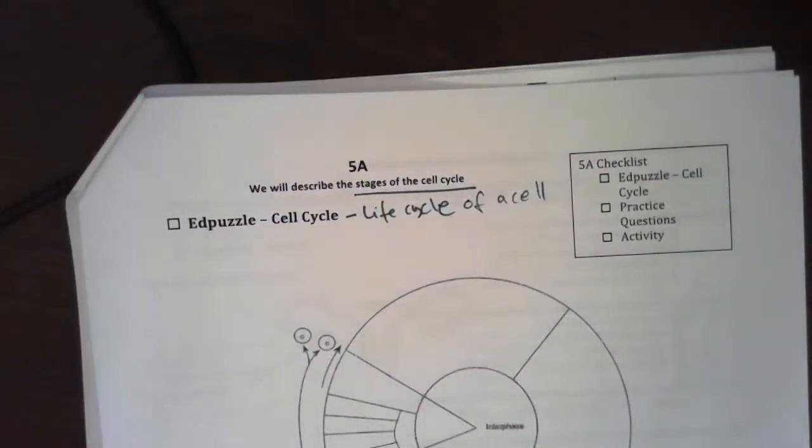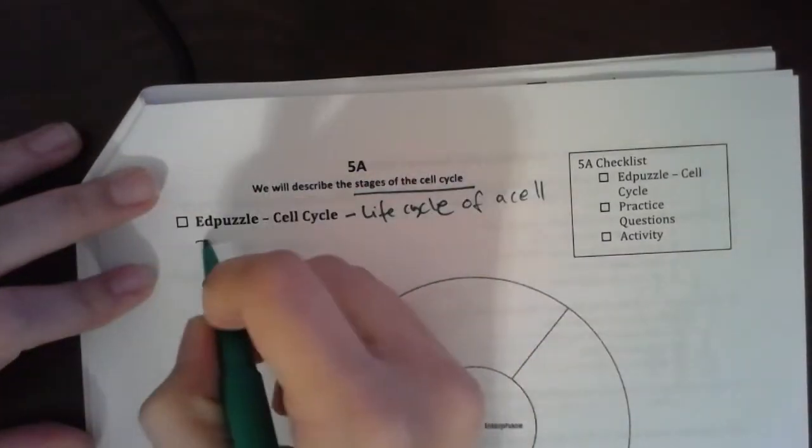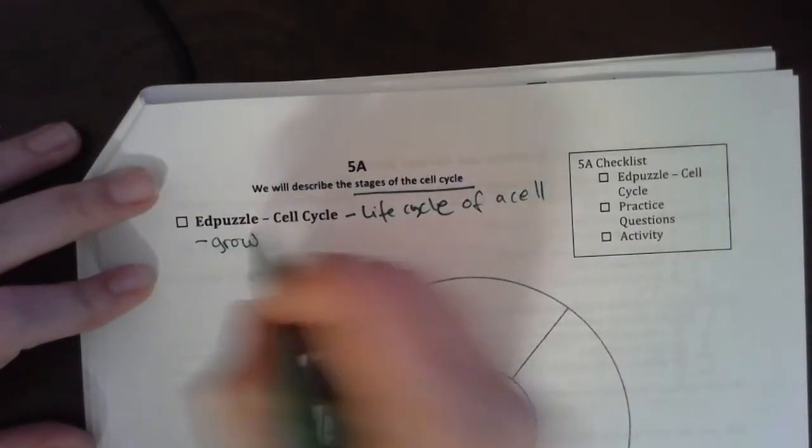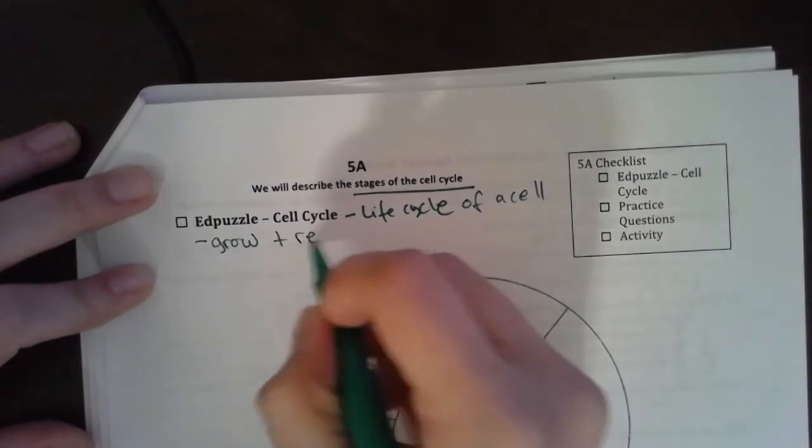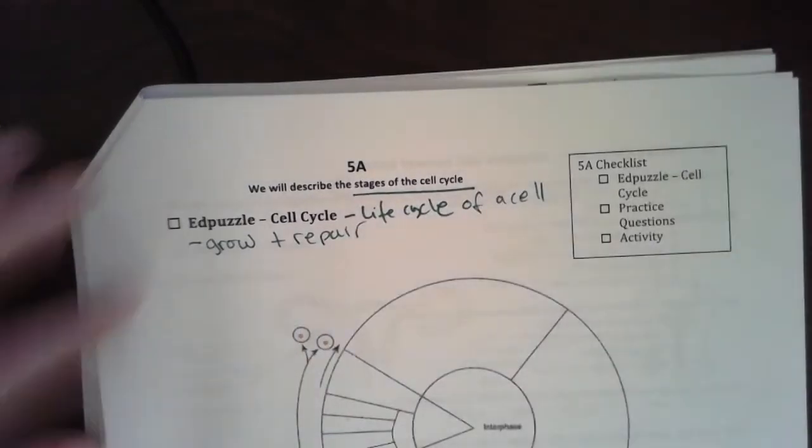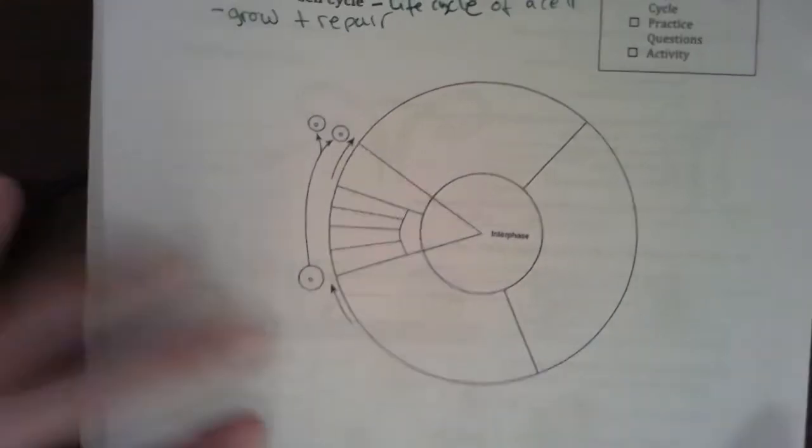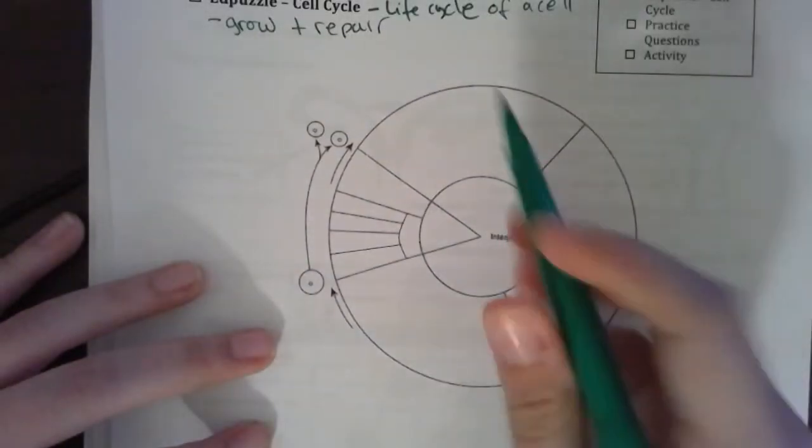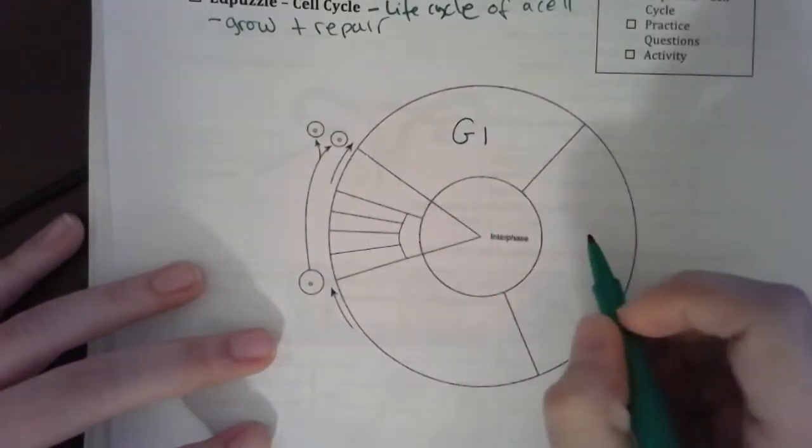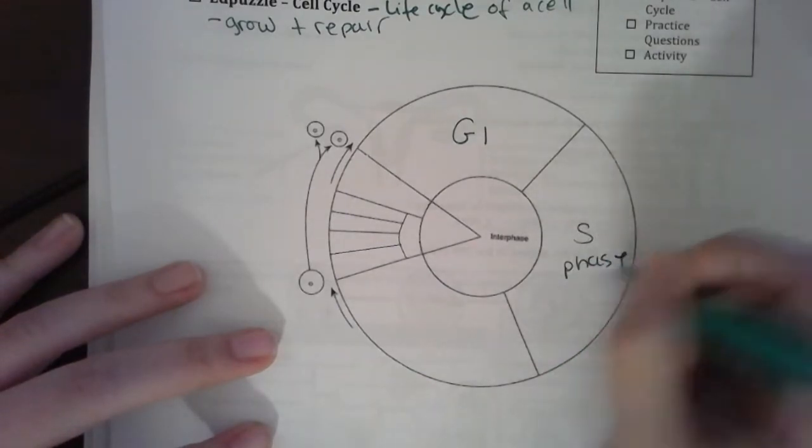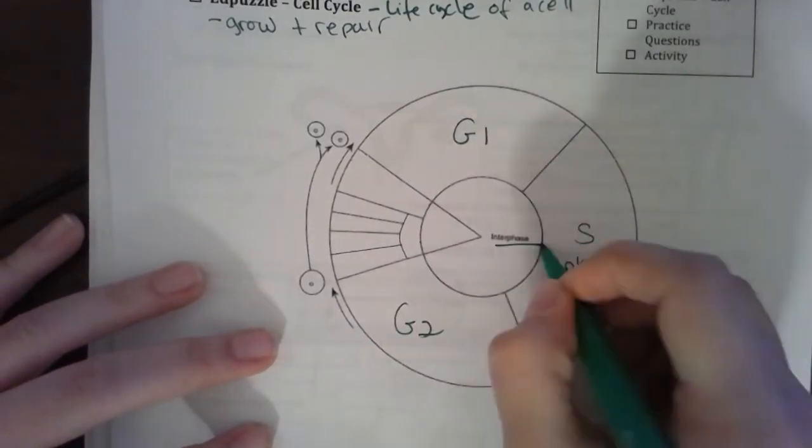Okay, we need the cell cycle in order to grow and repair, all of that stuff. So we're going to fill in this nice little pie chart. We have G1, S phase, and G2. All of that is part of interphase.